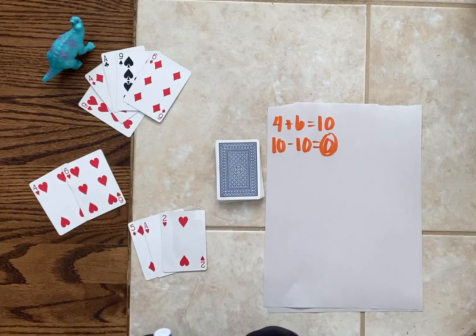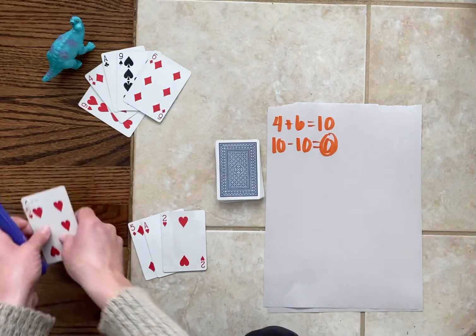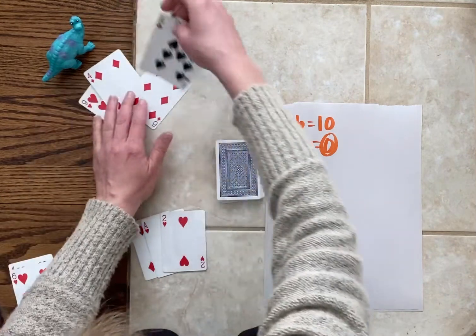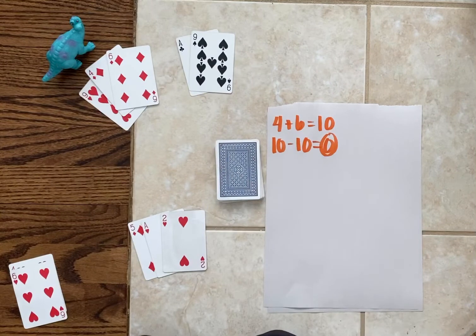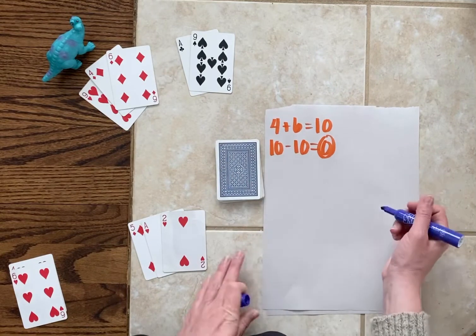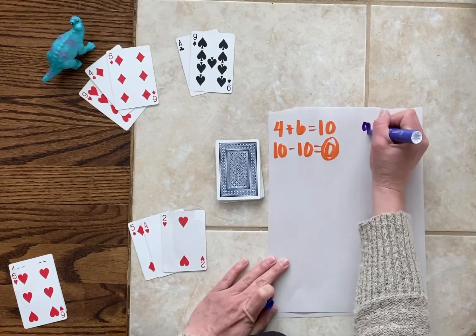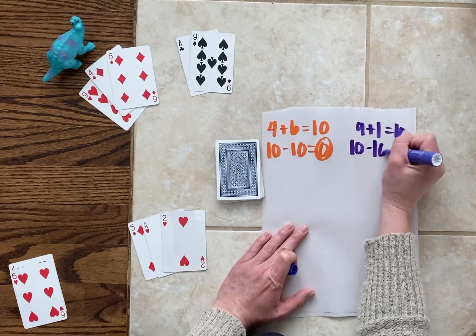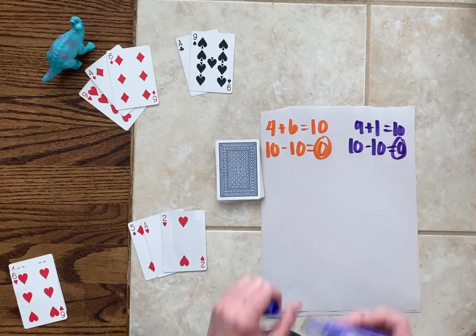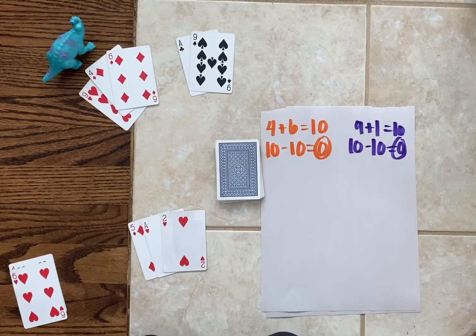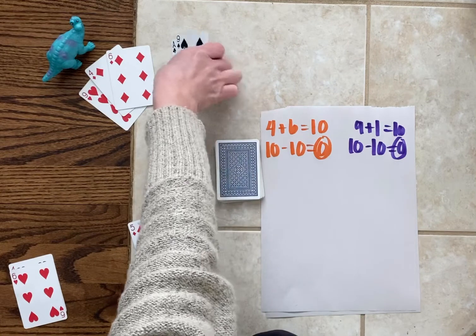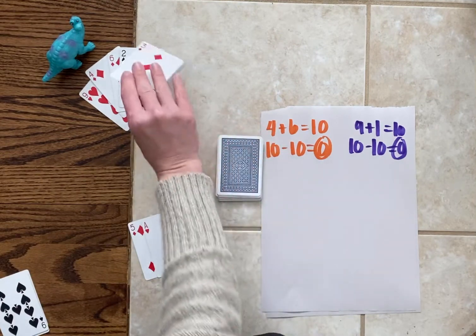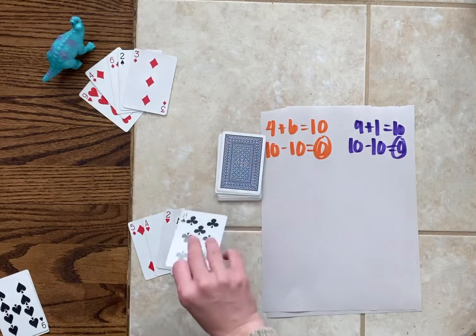Now it's dinosaur's turn. Dinosaur also has a six and a four or dinosaur has a nine and a one. So dinosaur would record his thinking. Our target number is 10 and dinosaur got exactly to 10. So right now we are both tied with a score of zero. We would each take two new cards for our pile and continue playing.